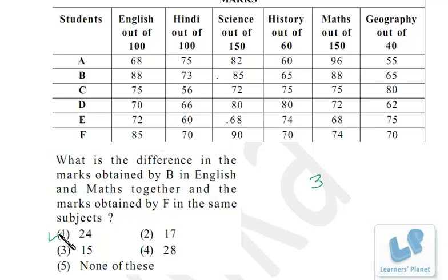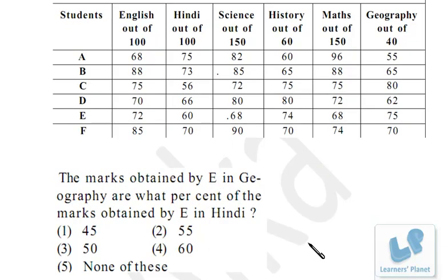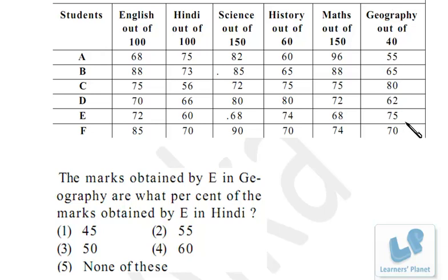You can see we solved this without touching paper and pen. Next question: the marks obtained by E in geography are what percent of the marks obtained by E in Hindi? E got 75% in geography, and geography is out of 40. 75% is 3/4, so 3/4 of 40 is 30 marks. In Hindi, total marks are 100 and E got 60%, so that's 60 marks. Therefore, 30 is 50% of 60 — E is getting 50% marks in geography compared to Hindi.